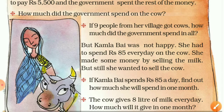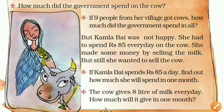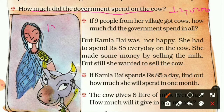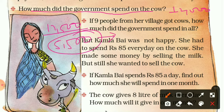How much did the government spend on the cow? We found it: twelve thousand rupees, by subtracting 17,500 minus 5,500. Seventeen thousand five hundred is the cost of the cow and five thousand five hundred is what each farmer had to pay, so the government paid twelve thousand rupees.